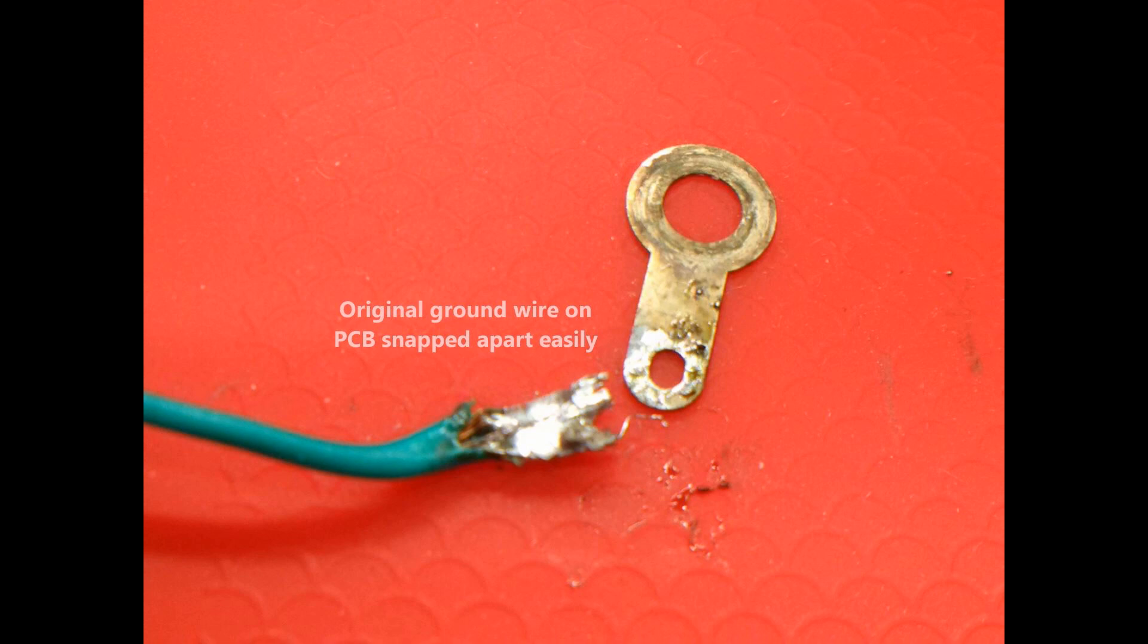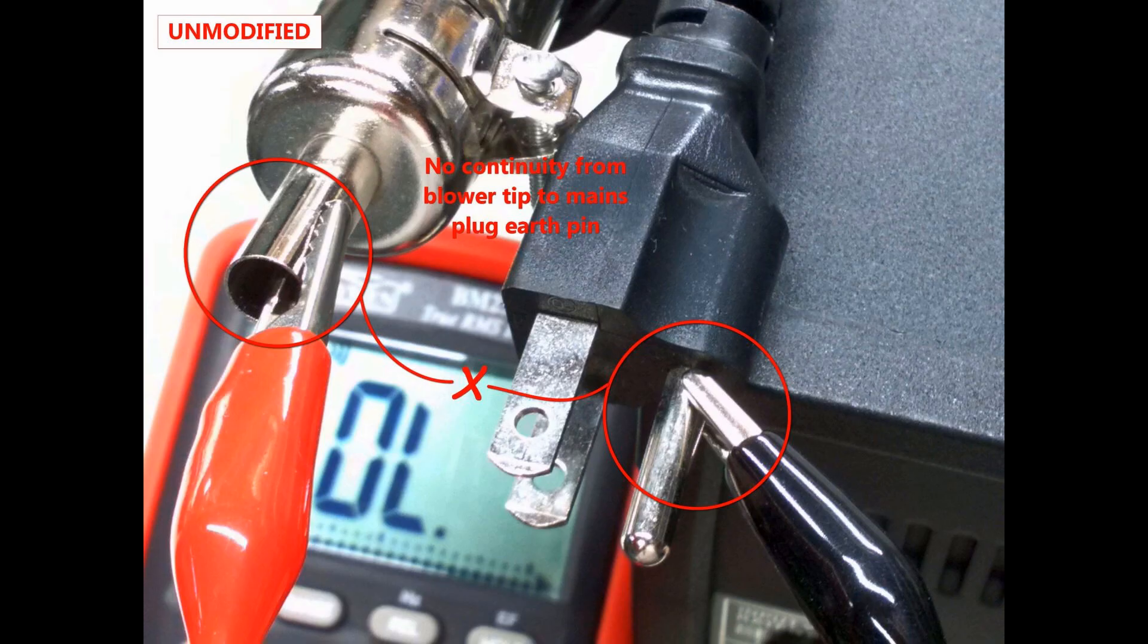And of course, no sooner did I try to tighten that blower handle ground wire nut, the solder joint just snapped off the ring connector. So to summarize my last five minutes of babble, the tip of the hot air blower, which is metal and you poke around all your electronics, is not connected to the ground prong of my mains plug.